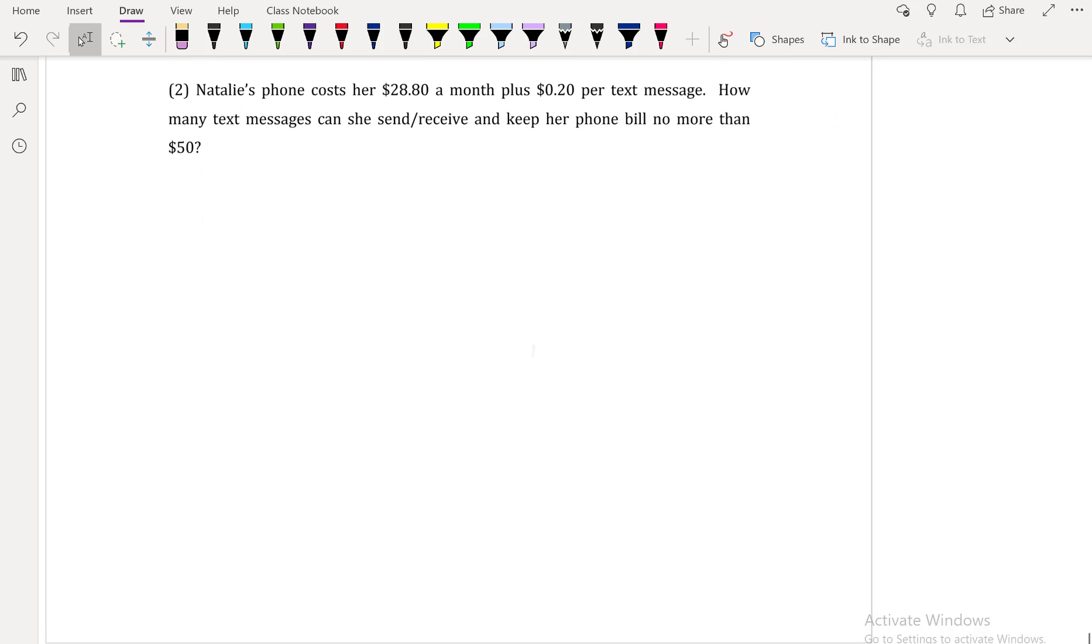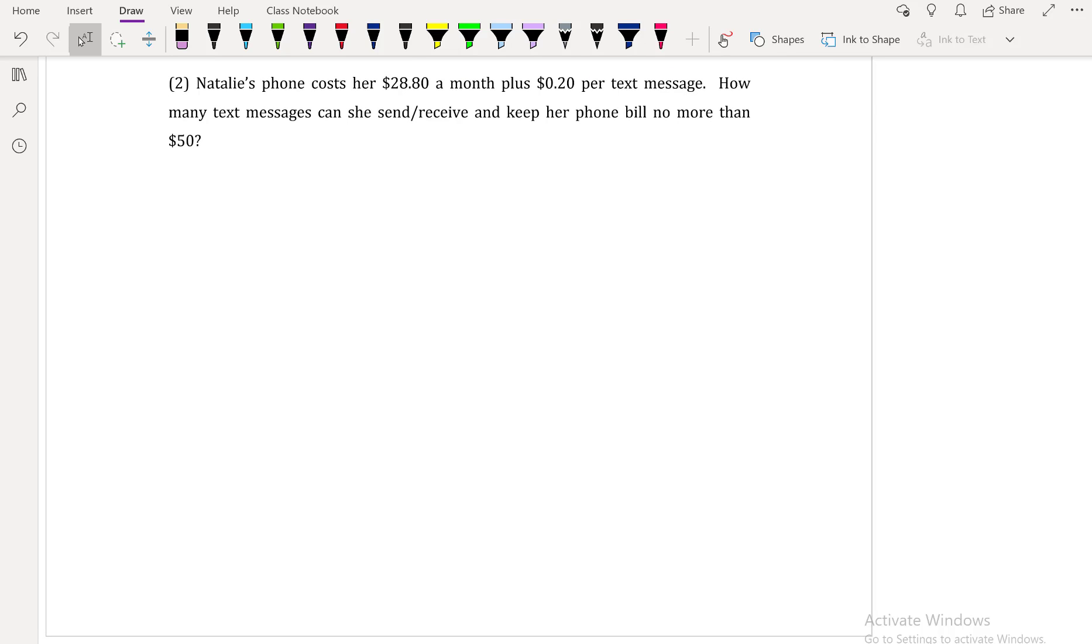It says Natalie's phone costs her $28.80 a month plus $0.20 per text message. How many texts can she send/receive and keep her bill no more than $50? So here, what we want to do is we want to set up a linear equation. And better yet, we don't necessarily want an equation. Since it specifically says that it has to be no more than $50, then we're going to switch that word equation and change it to inequality. So the inequality means it has to be less than or equal to $50.